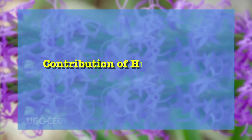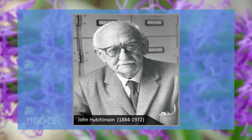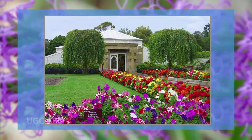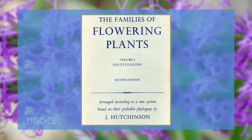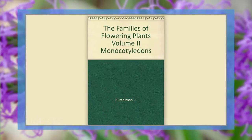With this we have reached our third objective, that is the contribution of Hutchinson to plant systematics. John Hutchinson was a British botanist associated with the Royal Botanic Gardens, Kew. Hutchinson first proposed his classification of angiosperms in his book The Families of Flowering Plants, the first volume on dicotyledons appearing in 1926 and the second on monocotyledons in 1934. The classification was revised periodically — second edition in 1959 and the third in 1973, one year after his demise.